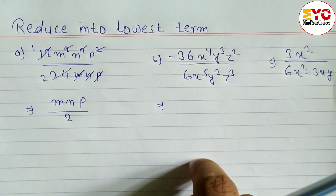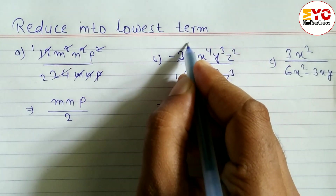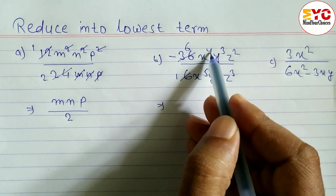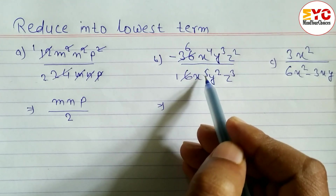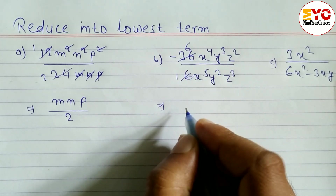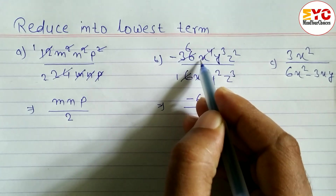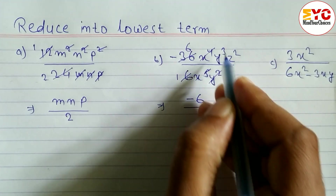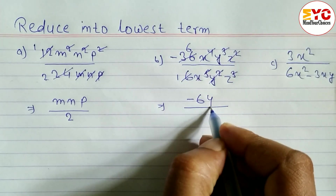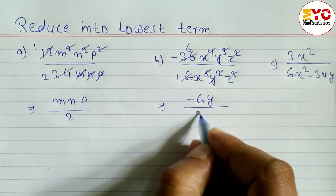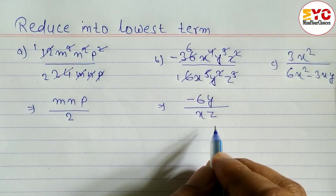Now for the next example: 6/36, and here we have x to the power 4 and x to the power 5. Since we divide, we subtract the powers — 5 minus 4, leaving x in the denominator. y² and y³ cancel leaving y in the numerator; z² and z³ cancel leaving z in the denominator. So the remaining answer is -6y over xz.